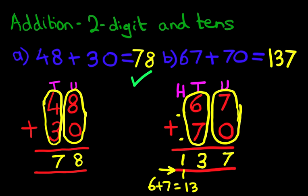67 plus 70 is 137. That is correct. So, let's give it a little tick. So, that is how we do addition of two-digit numbers and tens using the vertical format.